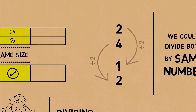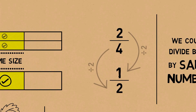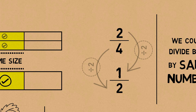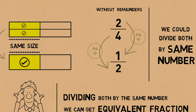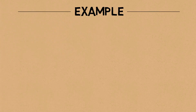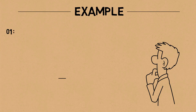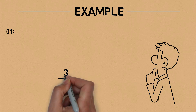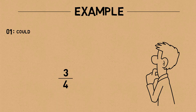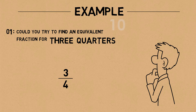When deciding which number to divide by, you need to remember that both the denominator and the numerator must be divided without any remainders. Now let's look at an example. The first example is three quarters — could you try to find an equivalent fraction for three quarters?